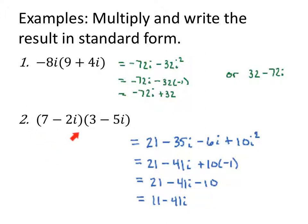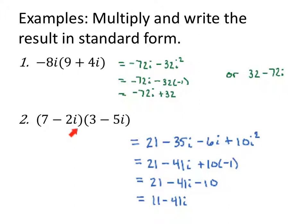If I have a complex number 7 minus 2i and I'm multiplying by 3 minus 5i, I'm going to use FOIL. First: 7 times 3 gives 21. Outside: 7 times negative 5i makes negative 35i. Inside: negative 2i times 3 is negative 6i. Last: negative 2i times negative 5i is positive 10i squared. So 21, then negative 35i and negative 6i makes negative 41i. 10i squared is the same as 10 times negative 1, which is negative 10. 21 minus 10 is 11 minus 41i is our product.